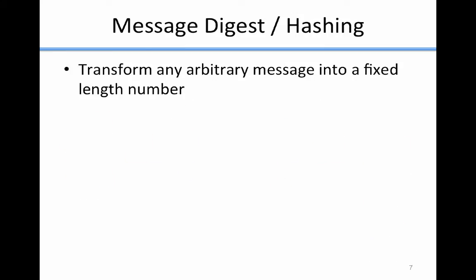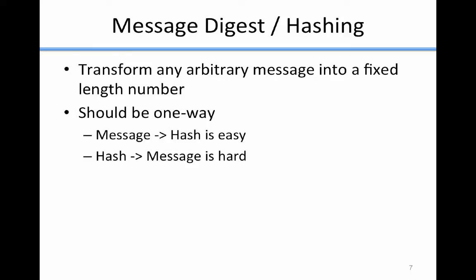The third type of modern cryptography is called a message digest or hashing. The goal is to transform any arbitrary message into a fixed length number. Hashing is not strictly a technique for encryption, but we lump it in with cryptography because we use it in other cryptographic techniques. The hash should always be one way: given a message, you should be able to hash it easily, but given the hash, you shouldn't be able to determine the message easily. Hashing is widely used in many areas of computing, not just security.